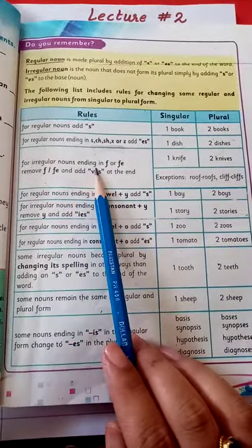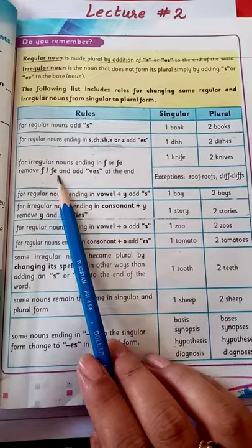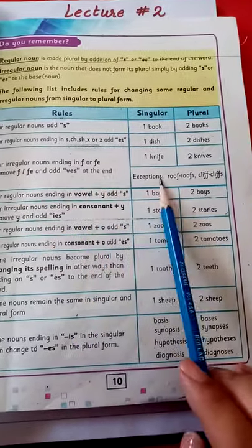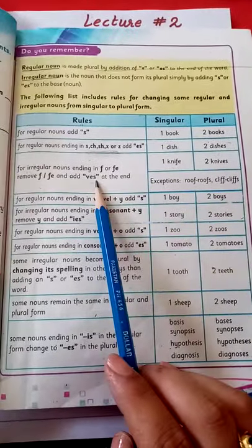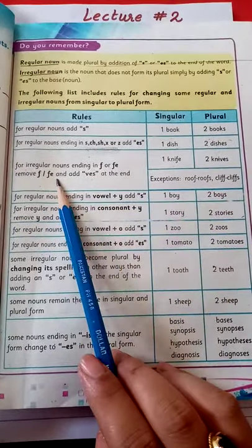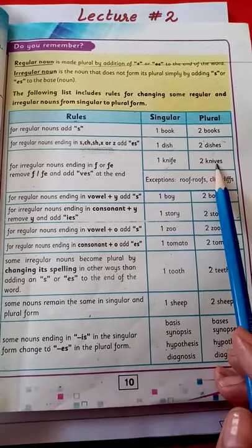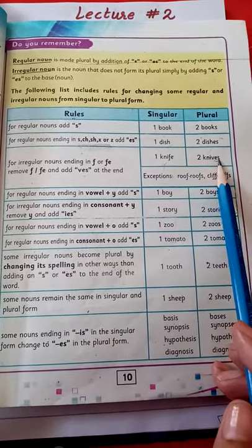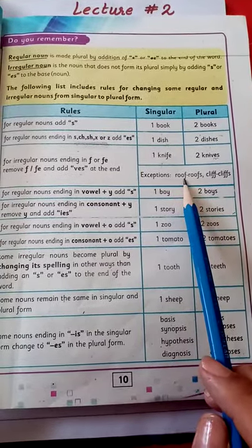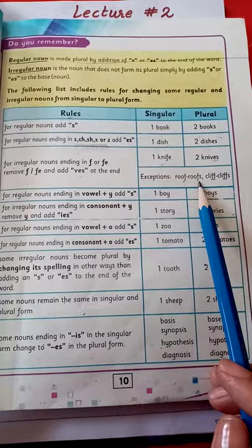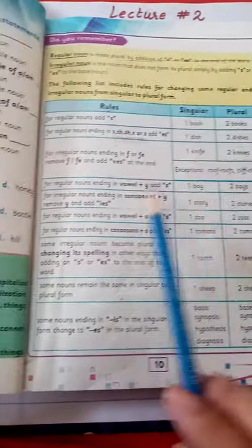For irregular nouns ending in f or fe, remove the f or fe and add -ves. For example, knife becomes knives. However, there are exceptional cases — roof becomes roofs and cliff becomes cliffs. In these cases the f is kept and we just add -s.